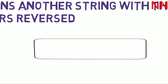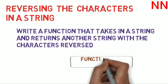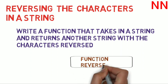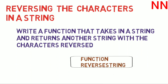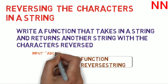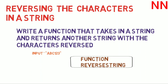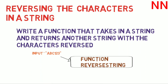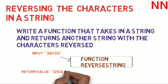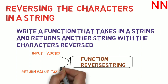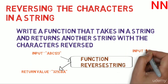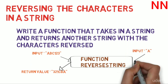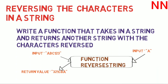Basically, what we want is a function called reverse_string and it takes in some input. Let's assume that input is ABC123 — that is the string we want to input into this function. The return value we want for this input is 321CBA, that is the reversed string. Now suppose the input was simply A, a single character string — the output should simply be A.